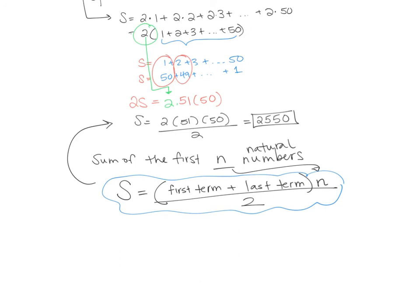We could also write it a little more generally, which is written like S is equal to n plus 1. Because really our first term if we're starting at 1 is going to be 1, and our last term will be n, times the total number of terms over 2. So sometimes you might see it like that.